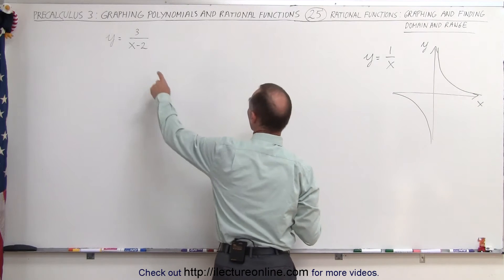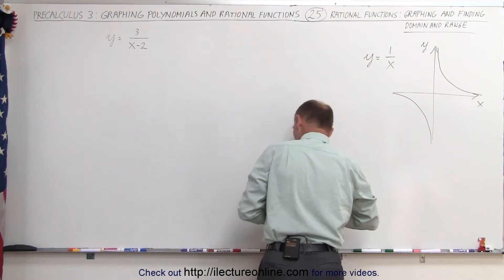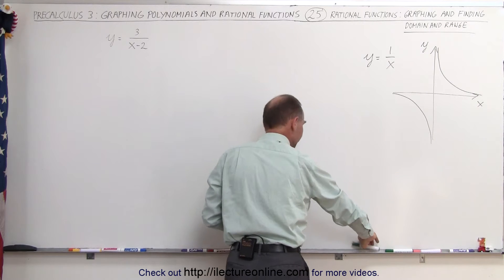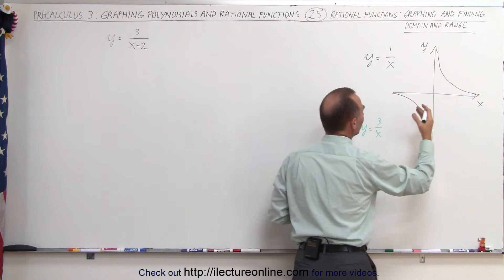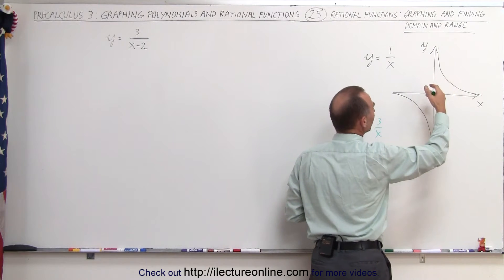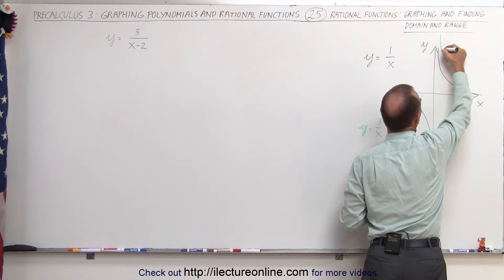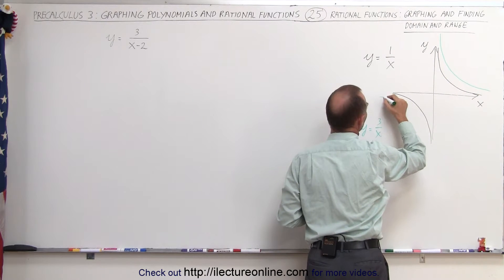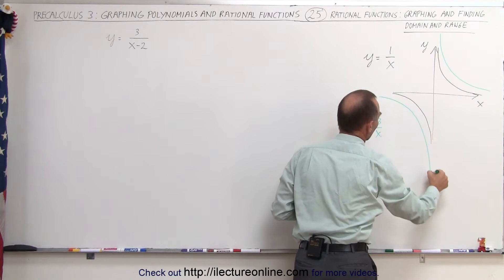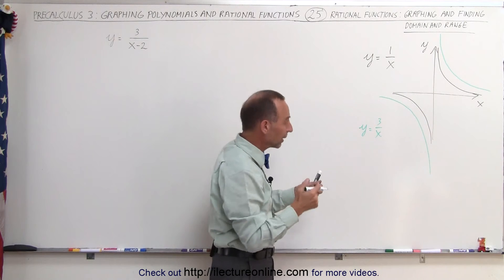What happens when you try to graph y equals 3 over x? When you try — I'll use a different color — if you graph y equals 3 over x, that means y is simply bigger for a particular value of x, so you get a curve that looks stretched compared to before. That simply changes the graph a little bit in that respect.